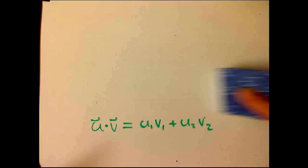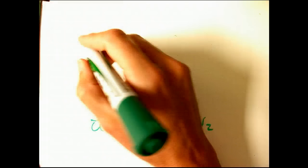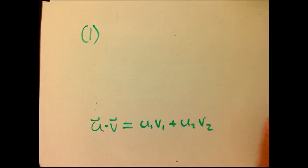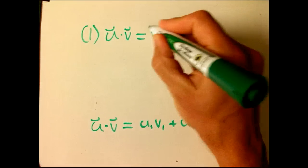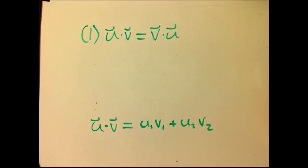So one, property one, is that it's symmetric. U dot V is equal to V dot U. That's clear from the definition.